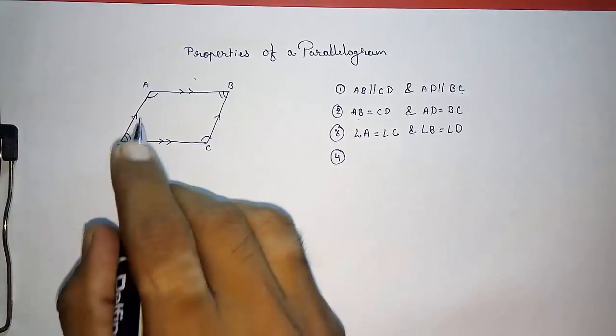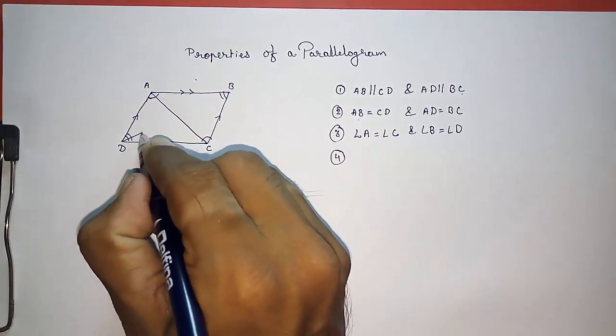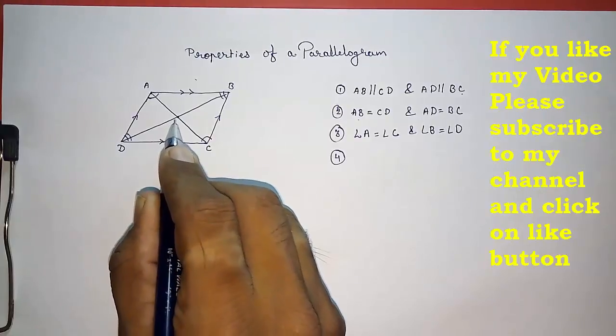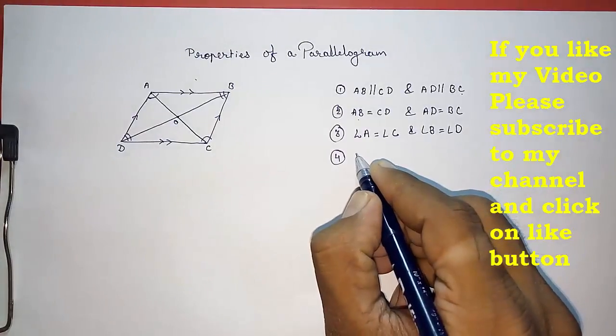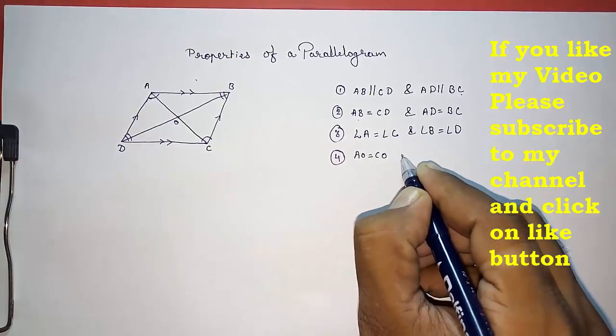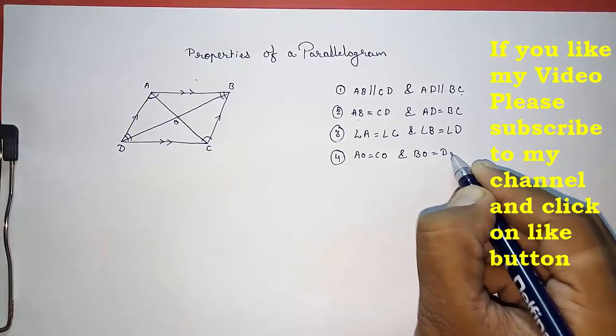Fourth property: the diagonals of a parallelogram bisect each other, which means we can say AO is equal to CO and BO is equal to DO.